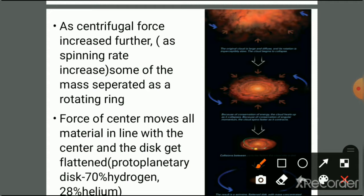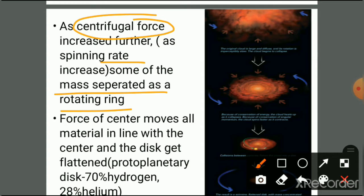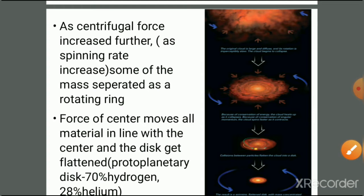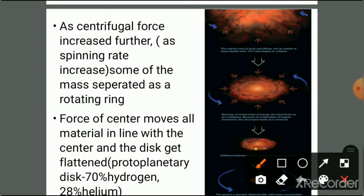As centrifugal force increases with spinning, some mass is separated as a rotating ring. The force of the center moves all material in line with the center, and the disk gets flattened due to the collision of particles. This protoplanetary disk is 70% hydrogen and 28% helium.